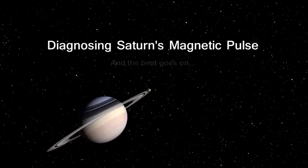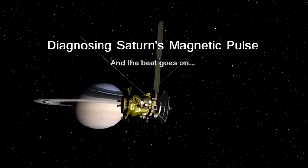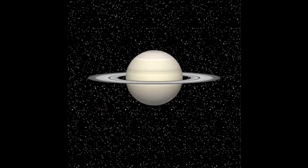Saturn has some strange periodic signatures in its magnetosphere that scientists have been struggling for years to explain. Using data from NASA's Cassini mission, scientists have come up with one possible explanation.